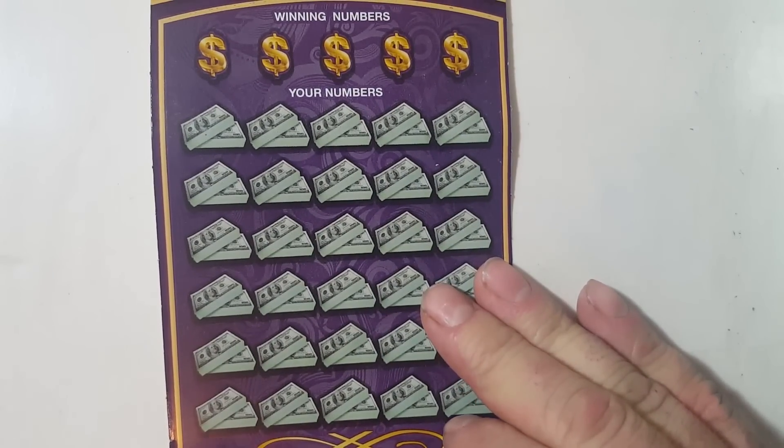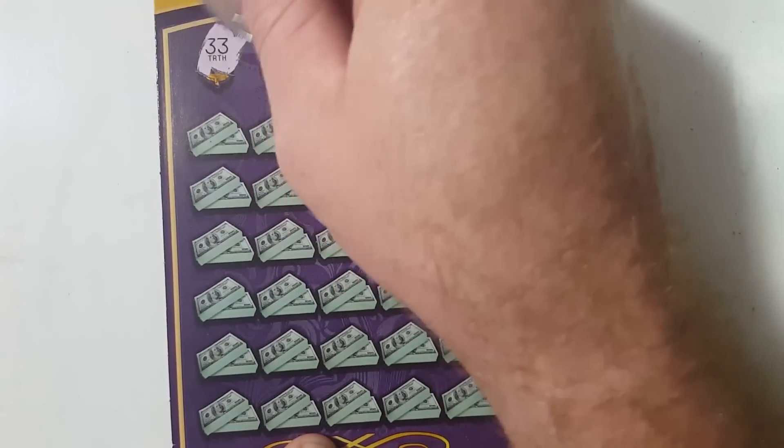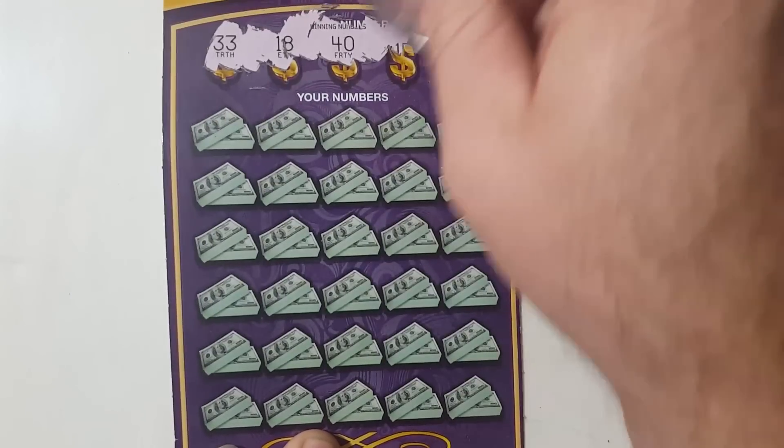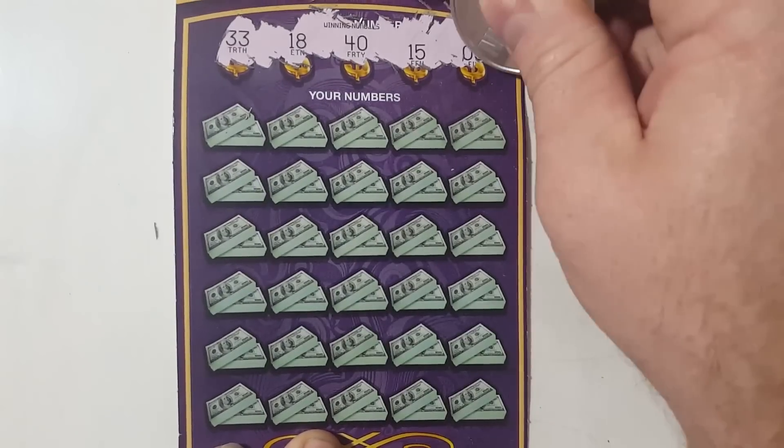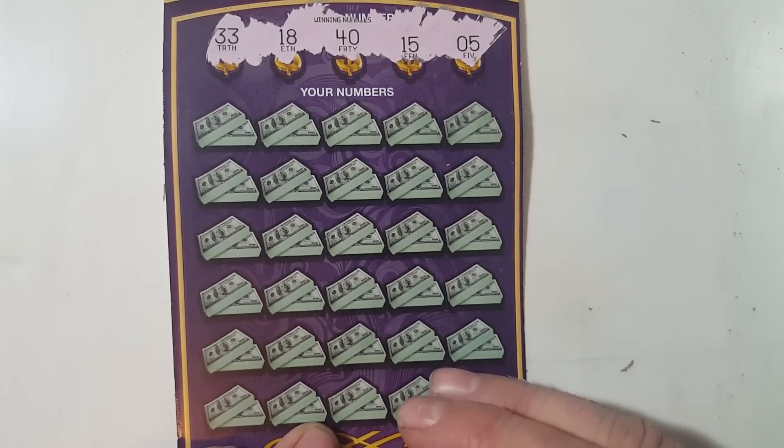75% of these tickets have been sold and half of the big prizes, the top prize of a million bucks, are still out there. So the odds went from one in a million to about one in half a million. Still crappy odds, but it's better.